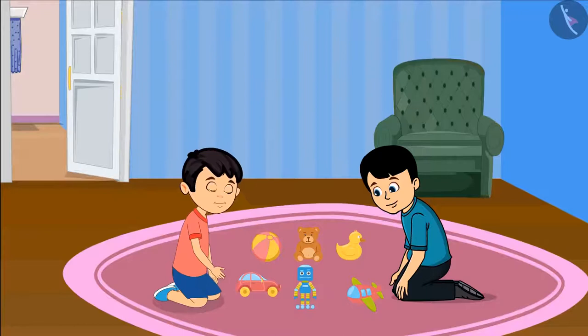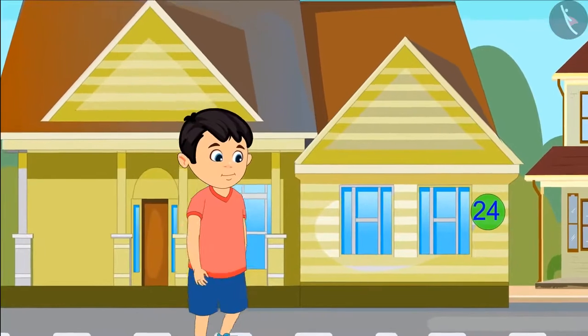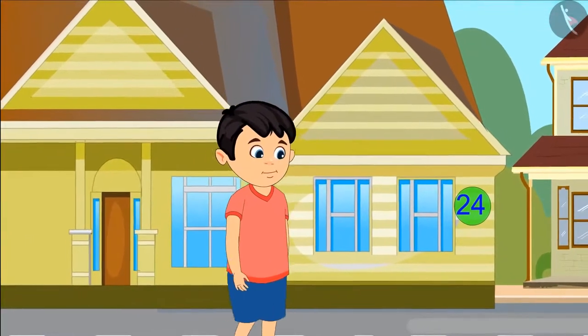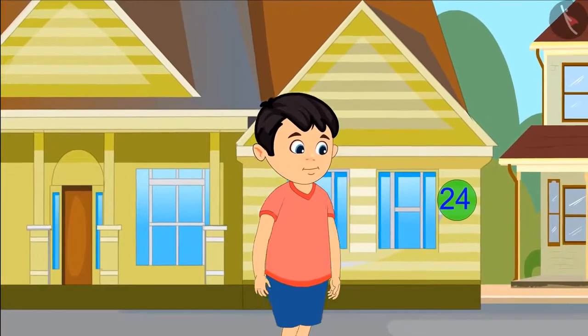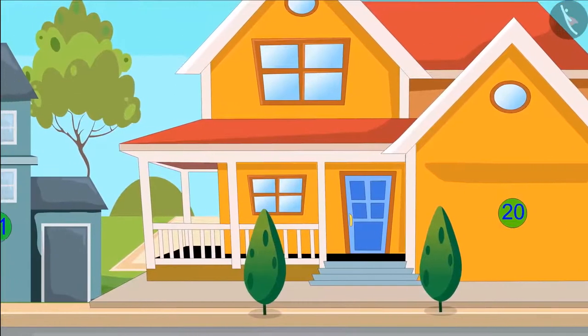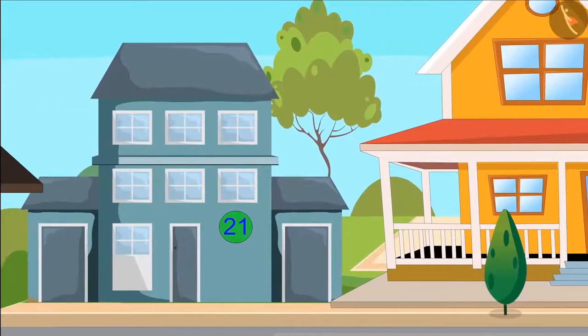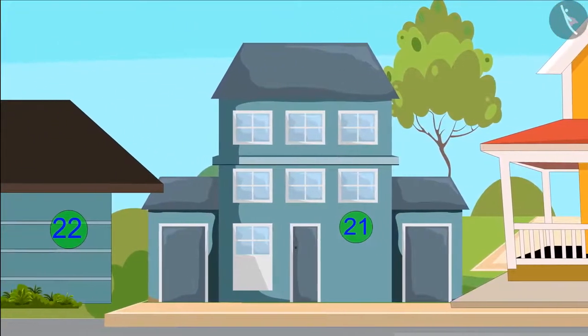Chotu reached Shyam's place and both of them started playing. After some time, Chotu left Shyam's house and started going to his own house. Hey kids, do you remember that when Chotu came from his own place to Shyam's house, what all house numbers did he see?